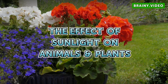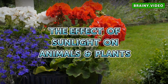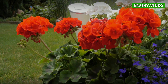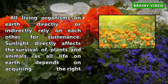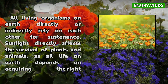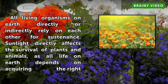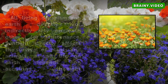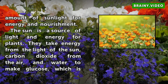The Effect of Sunlight on Animals and Plants. All living organisms on Earth directly or indirectly rely on each other for sustenance. Sunlight directly affects the survival of plants and animals, as all life on Earth depends on acquiring the right amount of sunlight for energy and nourishment.